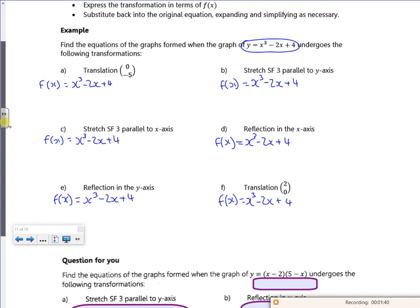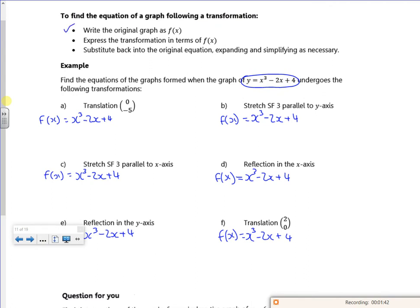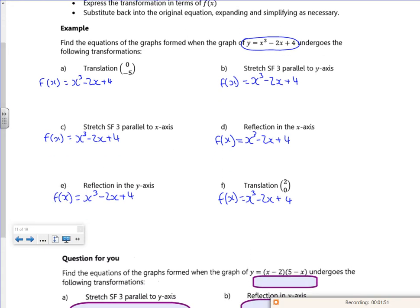Then it says write down the original graph. Then it says express the transformation in terms of f of x. So that's the translation of minus 5. So I'm taking off minus 5.